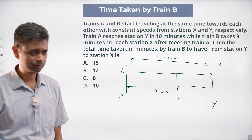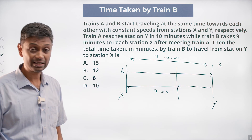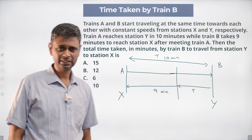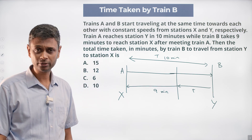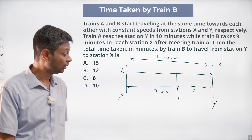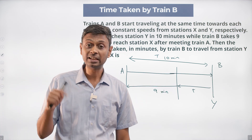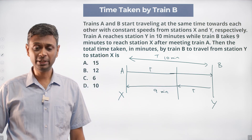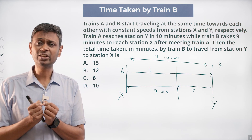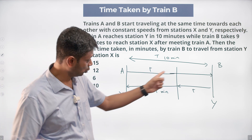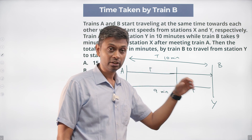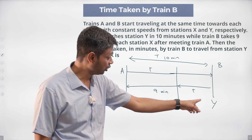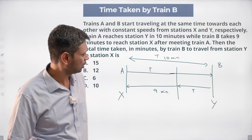Train B has traveled 10 minutes to get to the meeting point, and then 9 minutes to reach the remaining distance to get to station X. Train A should also have taken exactly 10 minutes total. They start at the same time and meet somewhere — let's say they meet after T minutes. After meeting, Train A goes on to Y and Train B goes on to X; Train B's remaining time is 9 minutes.